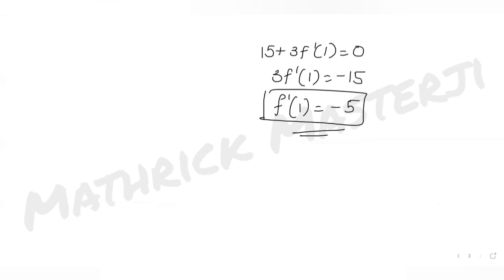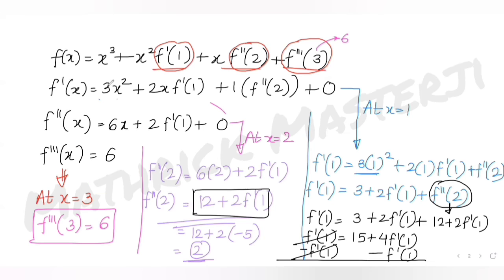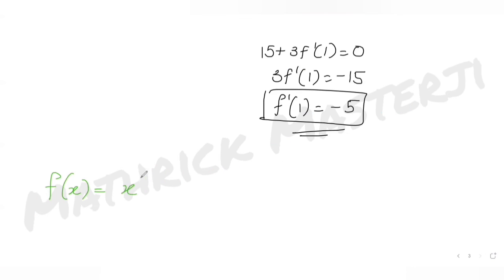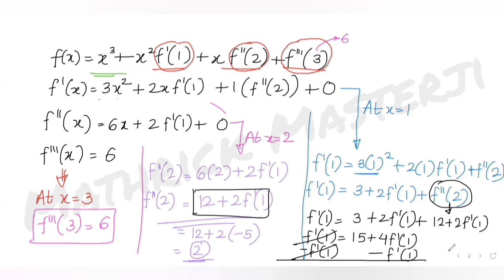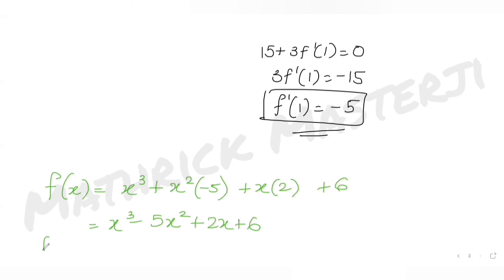Now putting all values into f(x): f(x) = x³ + x²·(−5) + x·(2) + 6, which simplifies to f(x) = x³ − 5x² + 2x + 6. Taking the first derivative: f'(x) = 3x² − 10x + 2.